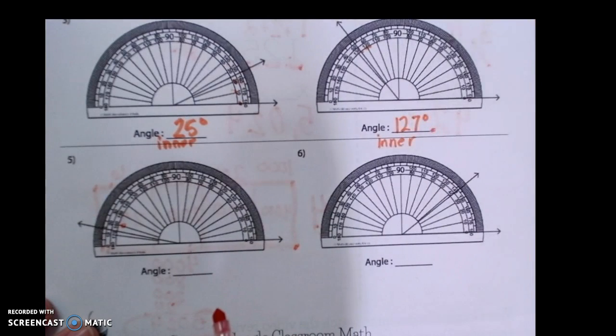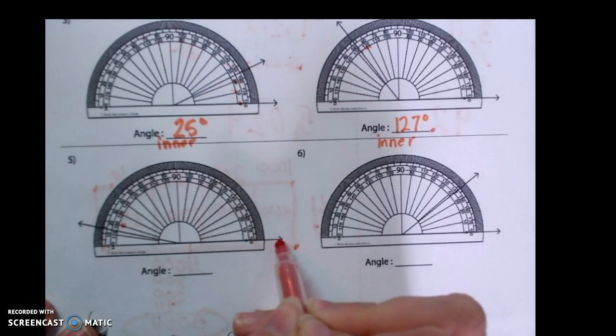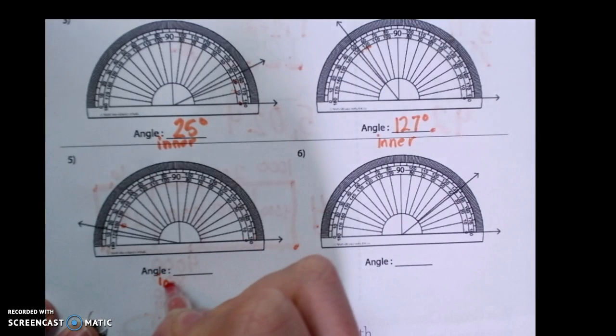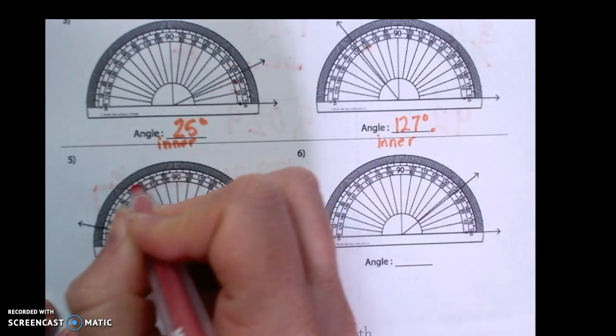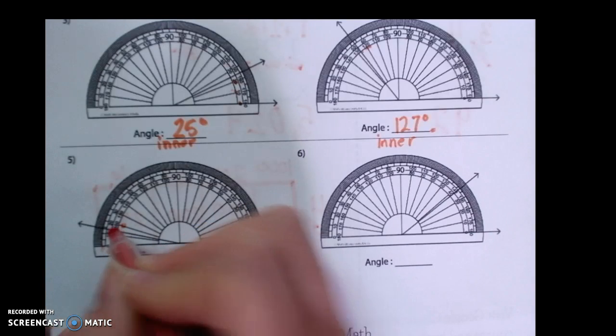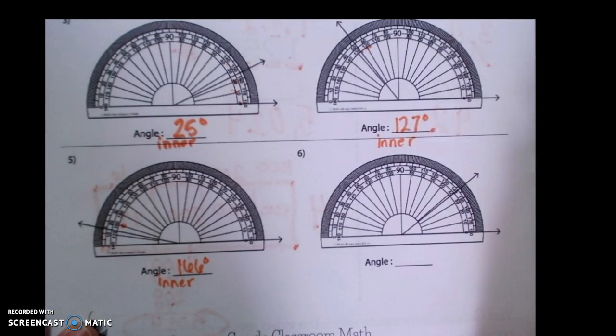Now that you tried those on your own, we're going to go ahead and see that the bottom ray is pointed to the right. So we're going to use the inner numbers. We're going all the way around. So we're at 160, 165, 166 degrees.